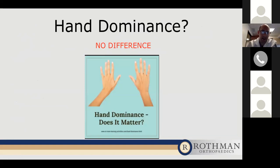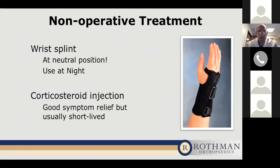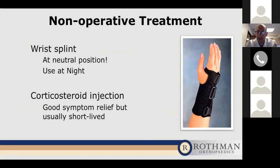Many people come in and say their left hand is numb but not their right, and they're confused because they're a righty. There's actually no difference with respect to which hand you may get carpal tunnel syndrome in depending on hand dominance — that was shown in a large study done at the Rothman Institute. Non-operative treatment is usually started first once we make the diagnosis. Typically, we start with using a splint, which holds your wrist in a neutral position and doesn't allow for excessive bending. Holding the wrist in neutral, especially at night, takes pressure off the nerve and can significantly subside your symptoms.